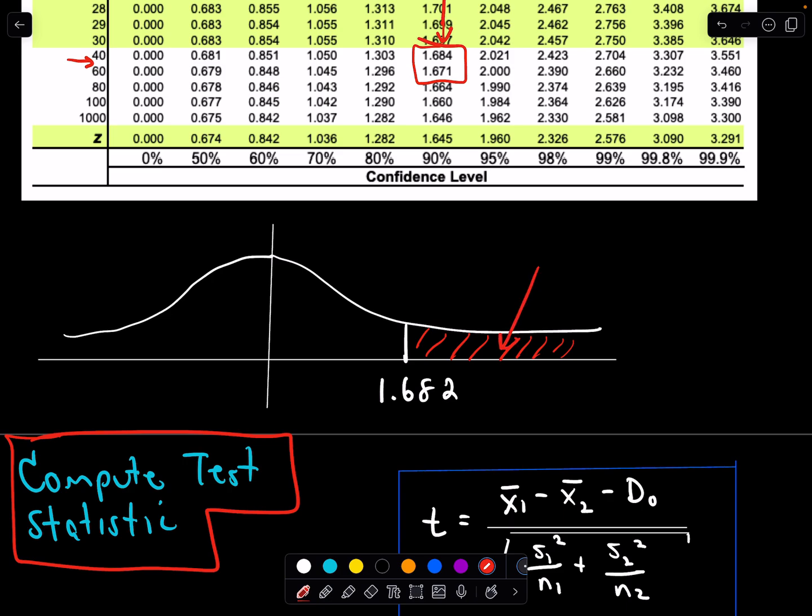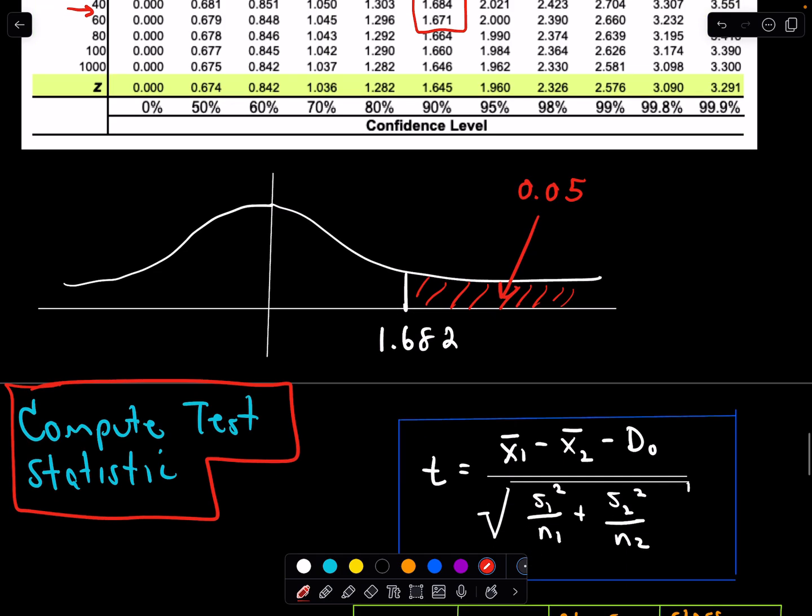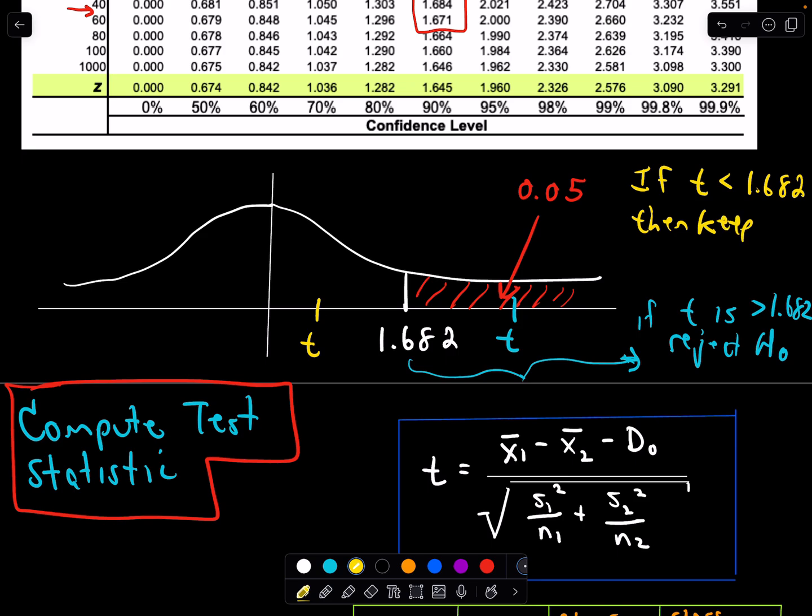Now all we have to do is compute our t value and the idea is if t is larger than 1.682, if our t value falls in here, if t is greater than 1.682, the idea is we simply reject H₀. And suppose our t value was smaller, if our t value is less than 1.682 then we'll keep, I always like to say we keep our null hypothesis. We don't discard it is what we do. So let's just compute our test statistic.